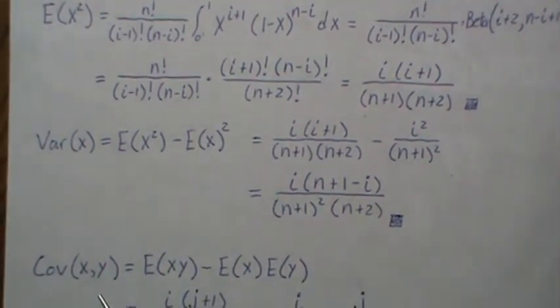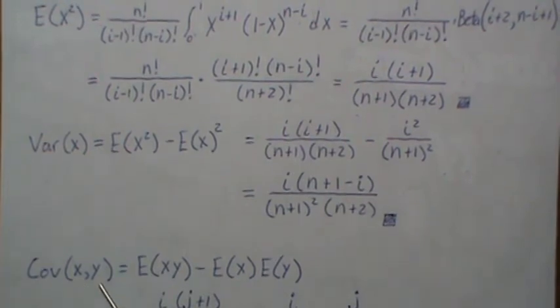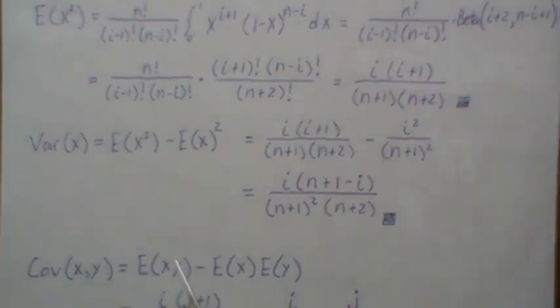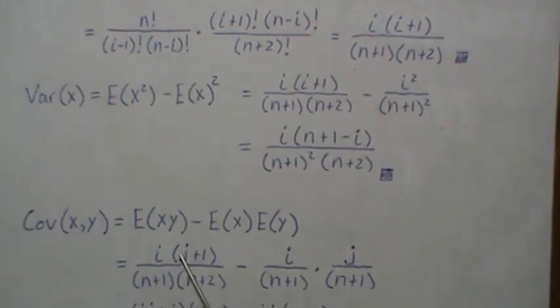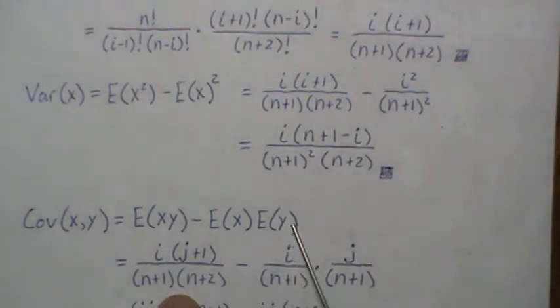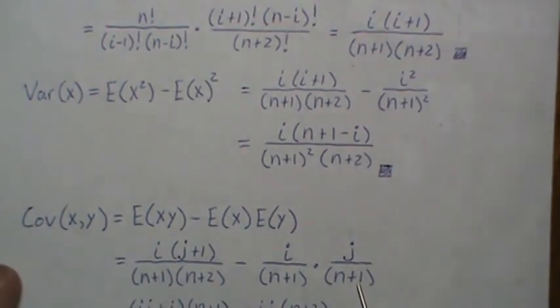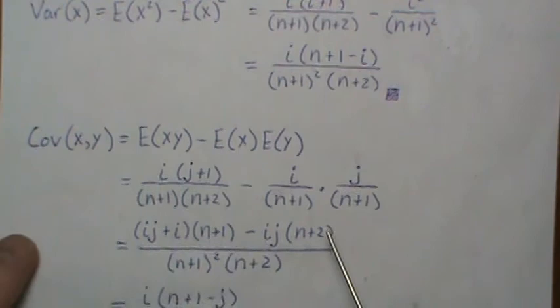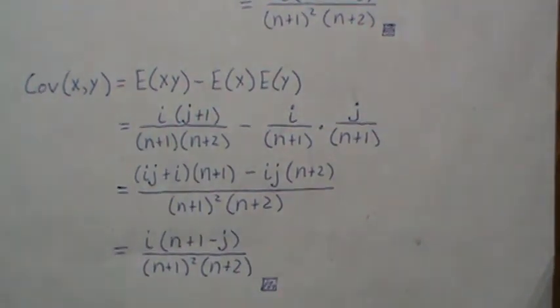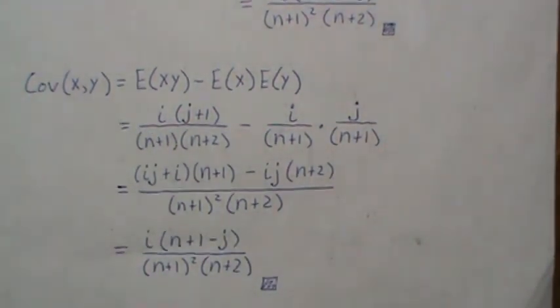The covariance between the ith and jth order statistic is this. It's the product moment minus the product of the means. So we plug in what we calculated before. We get a like denominator. And then we simplify, and that's it. That's the covariance between the ith and jth order statistic.